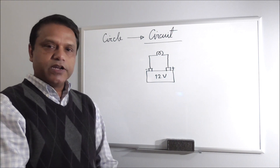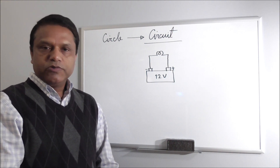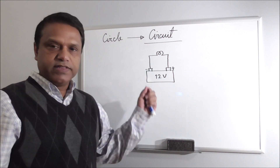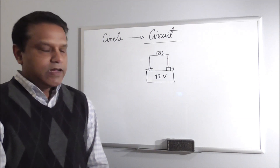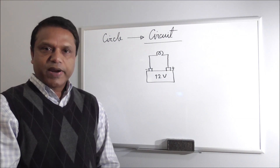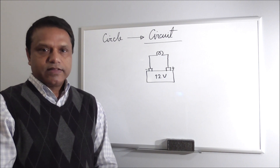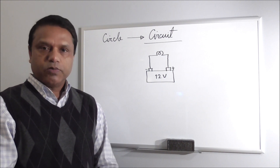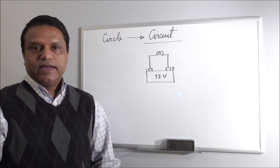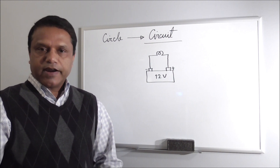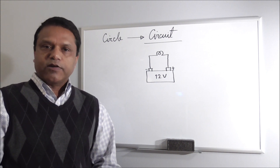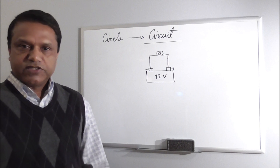This is the actual configuration of the circuit. But when you try to solve the circuit, we do not really draw it in this way. We use parameters to draw the circuit when you try to solve it. Solving the circuit means finding out the currents and voltages at different nodes and across different elements of the circuit.